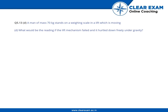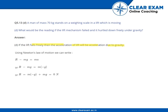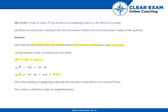What would be the reading if the lift mechanism failed and it hurtled down freely? If the lift falls freely, then the acceleration of the lift will be equal to acceleration due to gravity. Putting that value in Newton's law of motion, we get the resultant force as 0 Newtons. Thus the reading on the weighing scale will be 0, since there is no normal force, and this state is called the state of weightlessness.